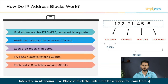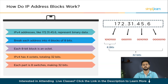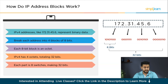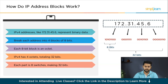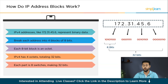Because there are four of these octets in an IPv4 address, the total bits for the entire address is 32 bits. So when you see an IPv4 address like 172.31.45.6, each of the four parts is actually a group of eight switches in the on and off position, making up a total of 32 bits. This binary representation is how computers communicate and understand these addresses on the internet.